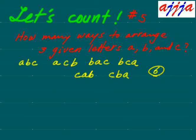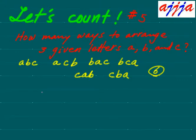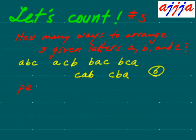Alright, let's count number five. How many ways to arrange? We have to count each one — but what if we have about ten different letters? There's gotta be a better way. So first of all, I want to ask: is there another word for 'arrangement'? That's right — in math we use the word 'permutation.' Permutation means arrangement, or display. How many ways to display three or ten given numbers?